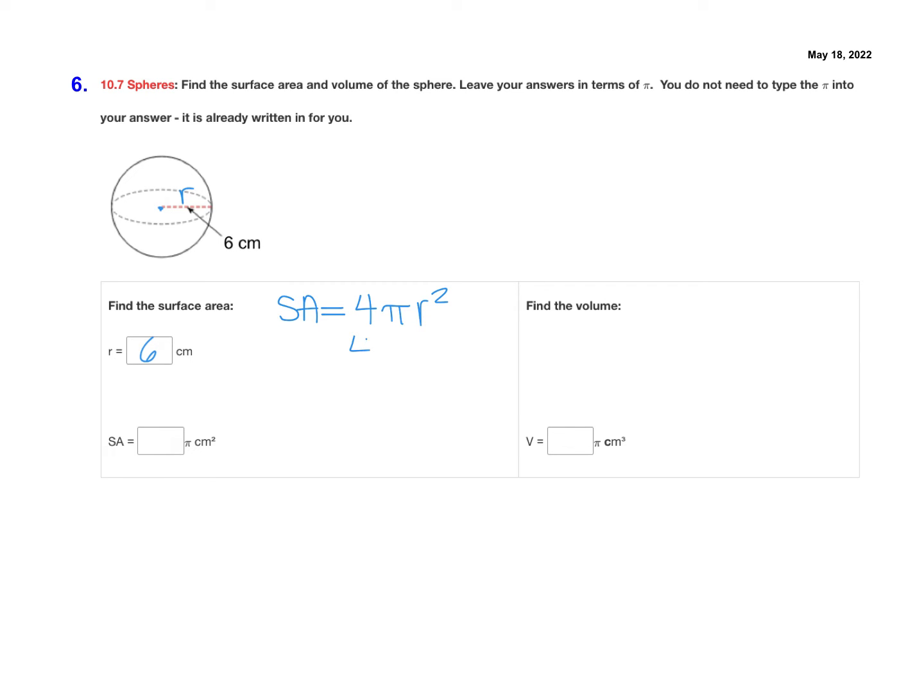Now the radius is 6, so we do 4 pi times 6 squared. And you can just type 4 times 6 squared right into your calculator. And that's going to give you 144. So we have a surface area of 144 pi centimeters squared.